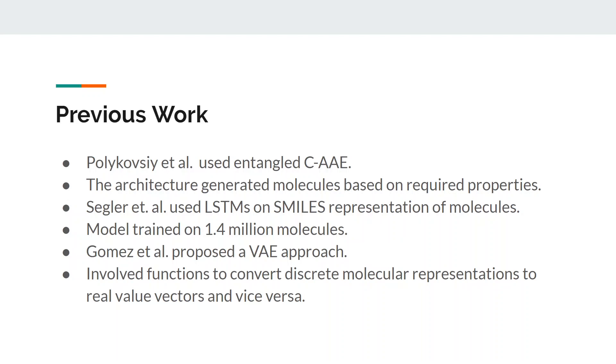The encoder is used to obtain a real valued continuous vector from a discrete representation of a molecule. The decoder converts the continuous vector back into the discrete representation. Predictor's task is to estimate the chemical properties from the continuous representation of the molecule. We have included corresponding results in our results section for the comparison with our proposed work.